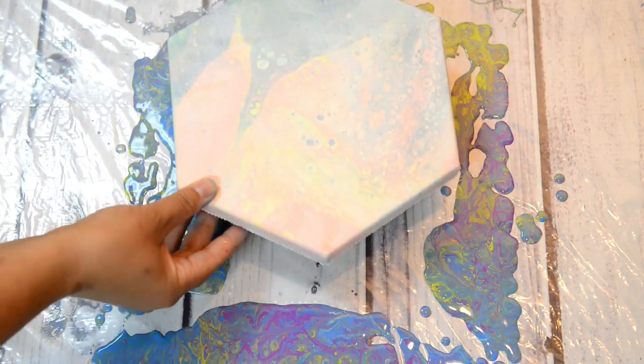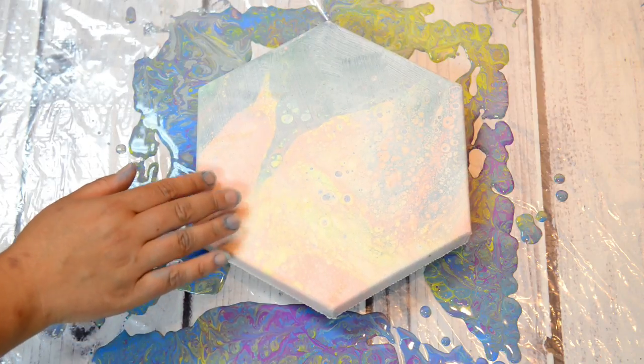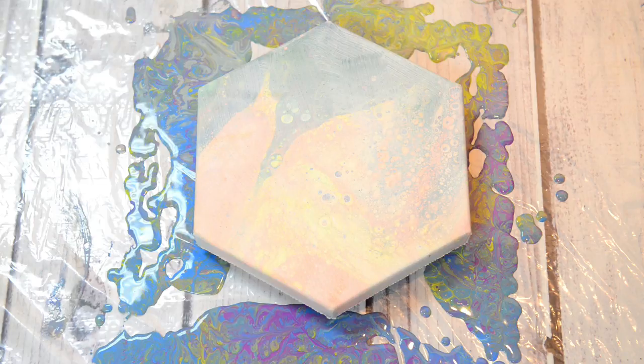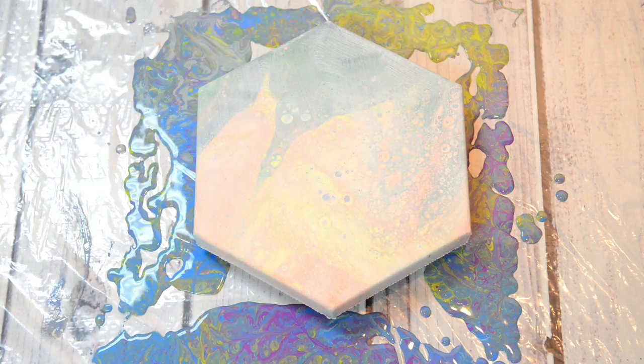I wasn't too happy with the colors and I didn't like the way it looked, so I just put a layer of gesso over it. Now I'm going to pour over that, so we're going to do another dirty cup flip.